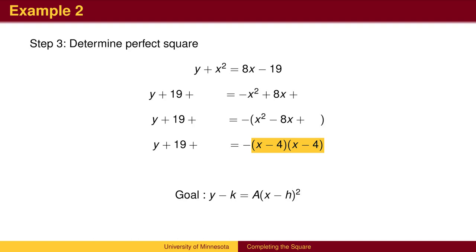When we foil x minus 4 squared, we get x-squared minus 8x plus 16, so we supply the 16 on the third line. But the 16 is inside the parentheses, so we have to distribute the negative sign.